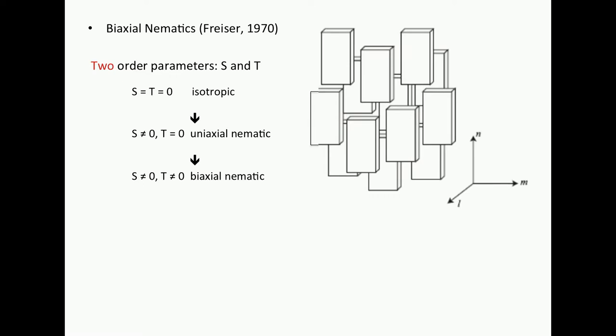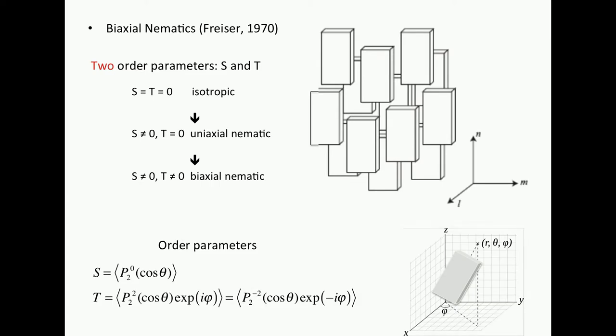So biaxial, there are two axes, so there are two order parameters. The first one is the same as before, S, and we have now a new one we call T from transverse. What you're told there by this person, Fraser, is the order parameter for S is the same as before, but now for the transverse one, you're told you have to go to the associated Legendre polynomials.